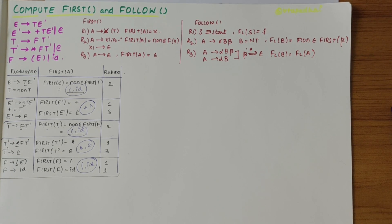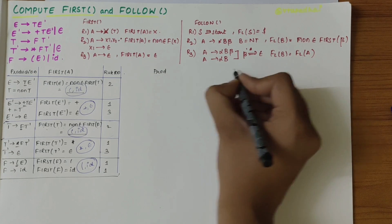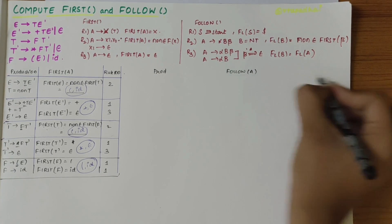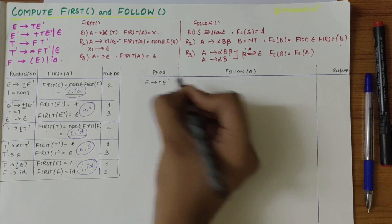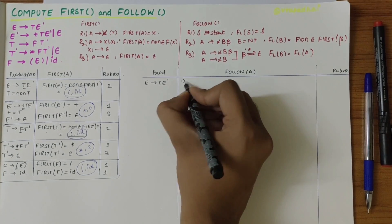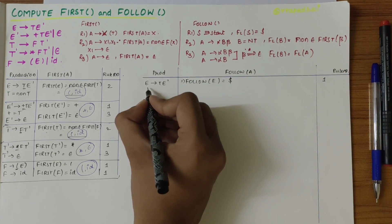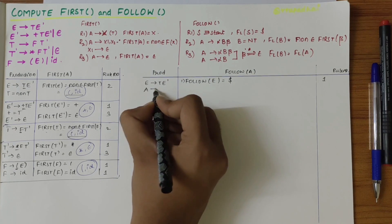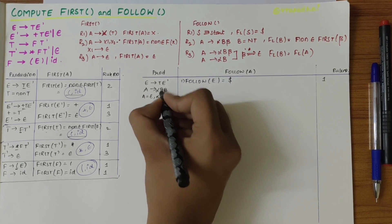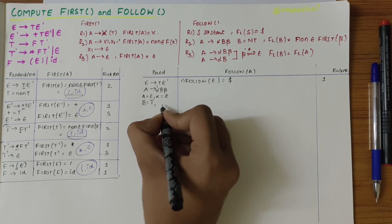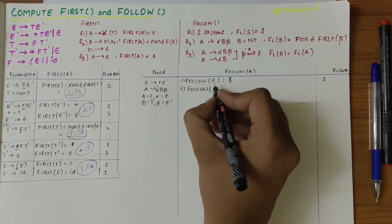Let's solve FOLLOW, writing productions one by one with rule numbers. For E derives TE', since E is the start symbol, follow of E is dollar by rule one. Comparing with rule two — A derives alpha B beta — here A is E, alpha is epsilon, B is T, beta is E'. So follow of T is equal to non-epsilon first of E'.